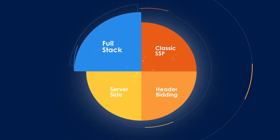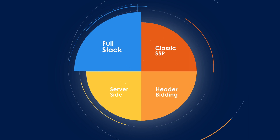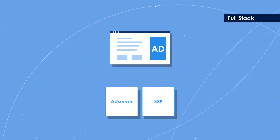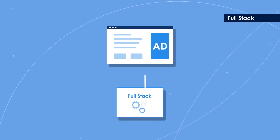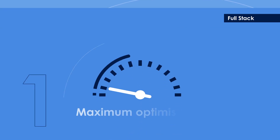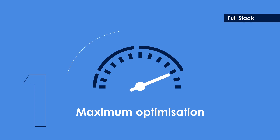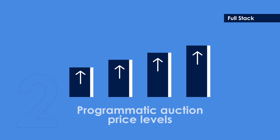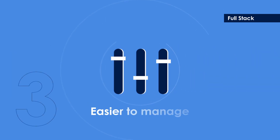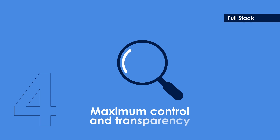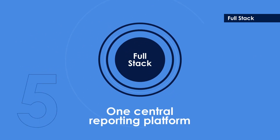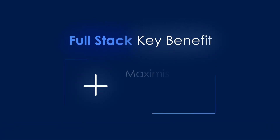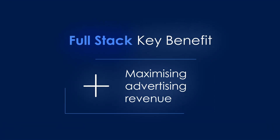Four: the full-stack holistic solution. With this solution, trading all of your campaigns takes place in one single auction through a holistic platform. This is best if you want maximum optimization — ad server campaigns that drive up price levels in the programmatic auction. It's a method that's easiest to manage and gives maximum control and transparency in one central reporting platform. The key benefit? It's a purpose-built tool for maximizing advertising revenue.